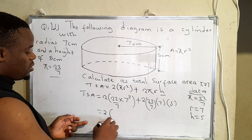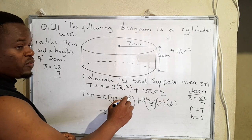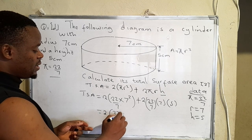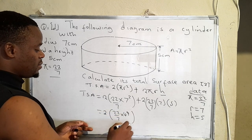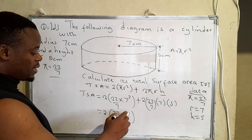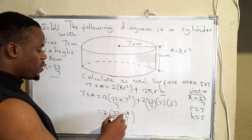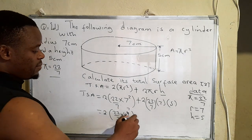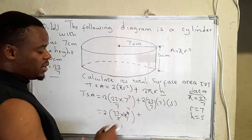Say 2, this one will be 49. That will be 22 over 7 times 49. We can actually simplify this one and that one. So 7 there, 7 there, 7 there, 7. And then we're going to add what we have here.